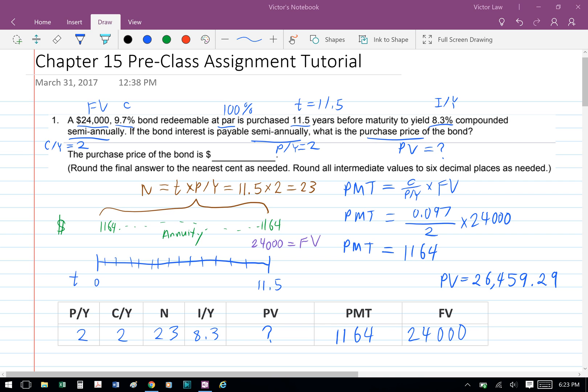Finally, we can fill the numbers in the boxes and then use our financial calculator to help us calculate. So we have P/Y equals 2, C/Y equals 2, N equals 23, I/Y equals 8.3, PMT is positive 1164, future value is positive 24,000.